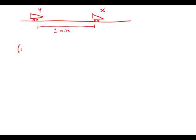So, statement number one tells us that car X is traveling at 50 miles per hour, and car Y is traveling at 40 miles per hour. Well, perfect.